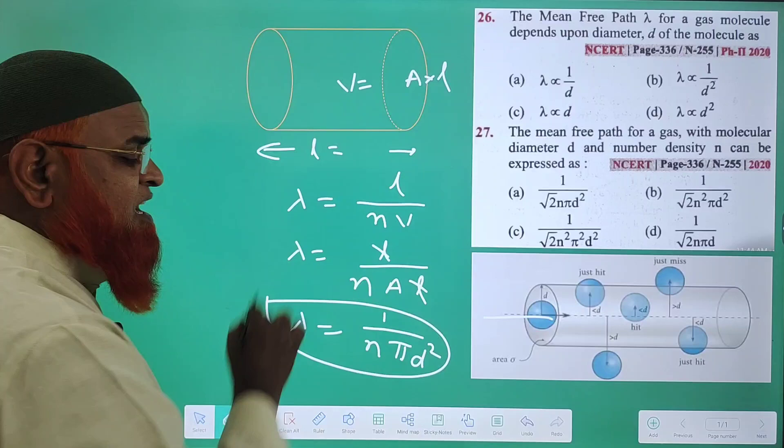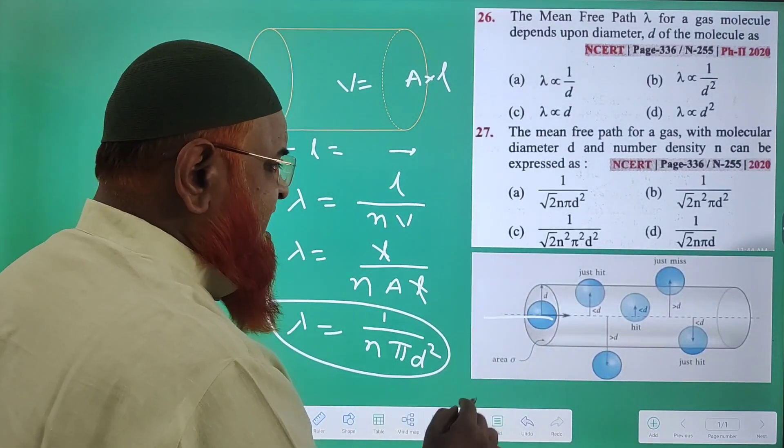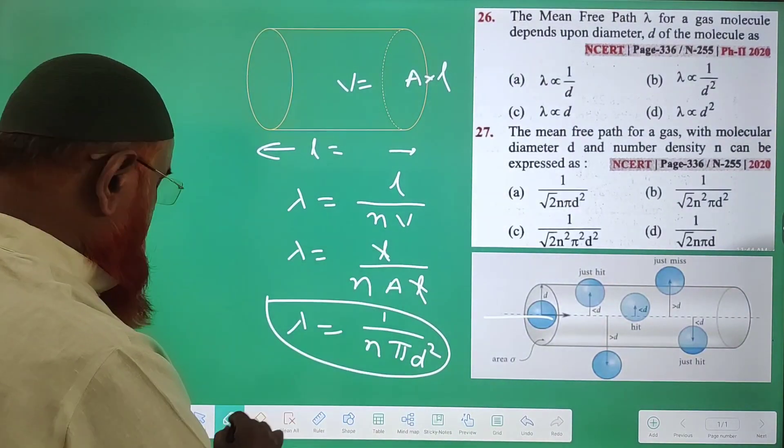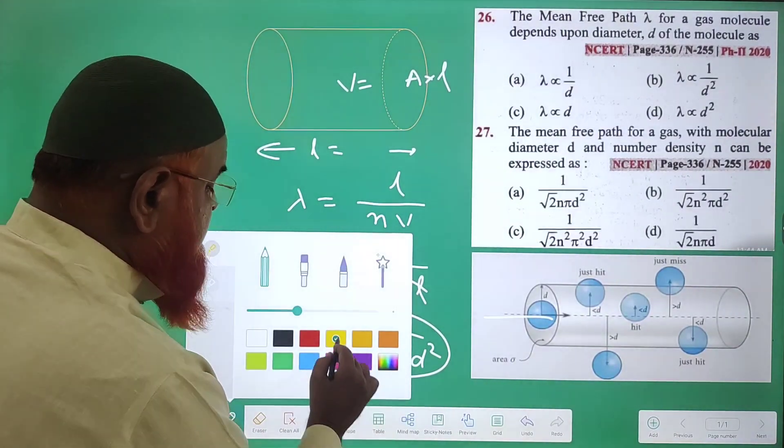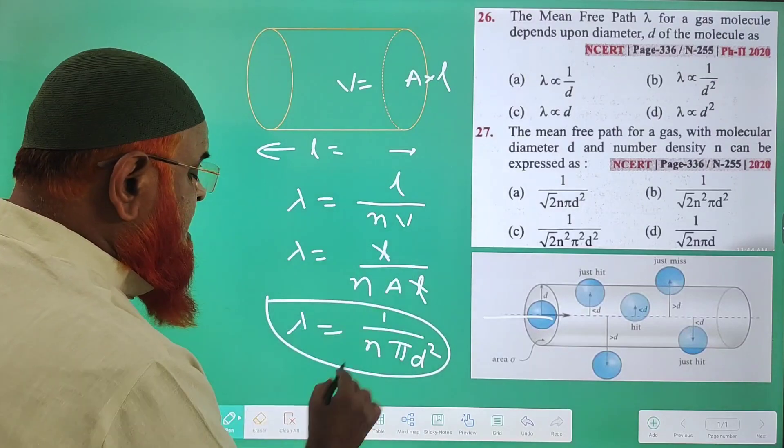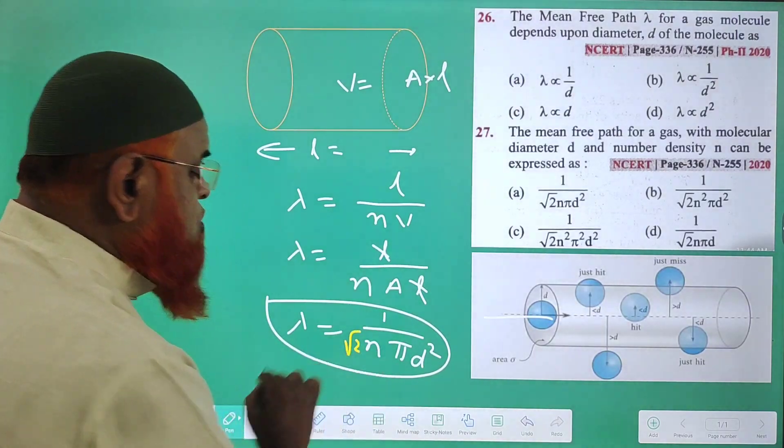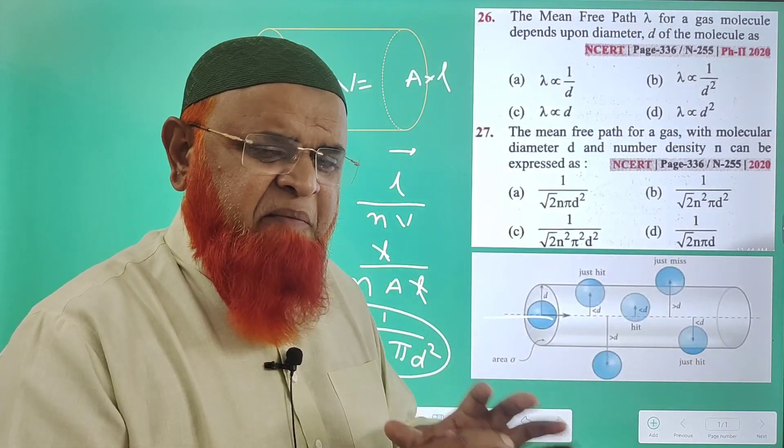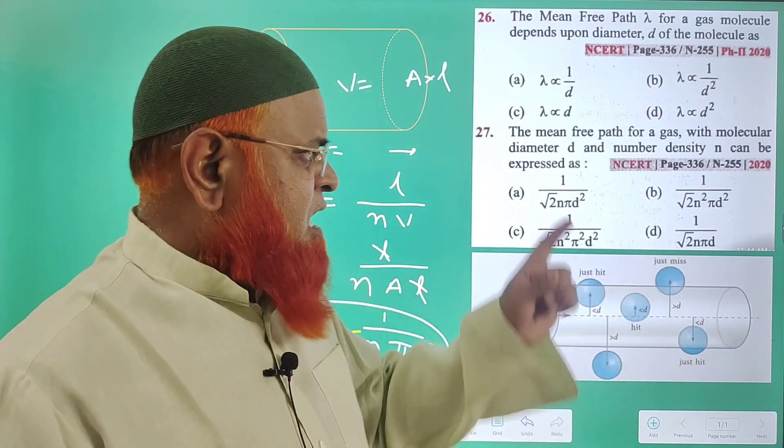But you have to add one more constant. What is that constant? In this formula, you have to add root 2 also. One constant you have to add in the denominator. That means your formula is ready. Now you can solve this problem very easily.